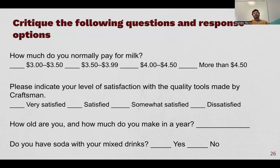'How old are you and how much do you make in a year?' — there's that 'and' again, which is a big error. I don't know if you want to know my age or my income — that should be two separate questions. 'Do you have soda with your mixed drinks?' — that question just doesn't make sense and is basically jargon. These are typical issues in survey questions that I see all the time.